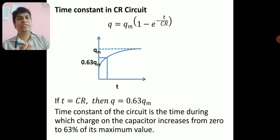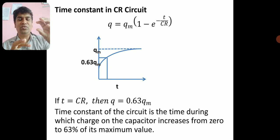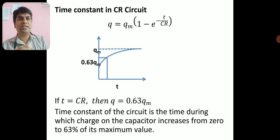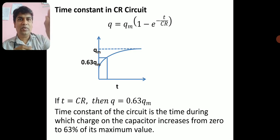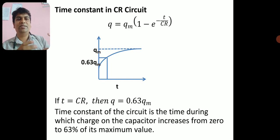After getting this equation, I substitute time t as C × R. The CR in the numerator and denominator cancel, giving e^(−1), which equals 1 − 1/e. Calculating this gives 0.63. So the charge on the capacitor is 0.63 times the maximum charge when t = CR. That is the key point — this is the time constant.